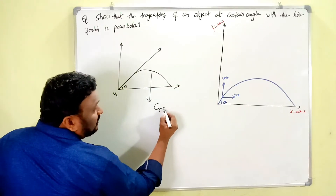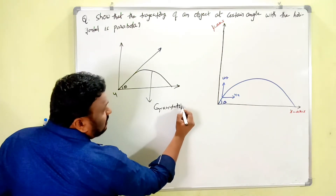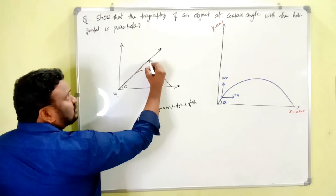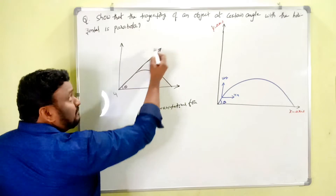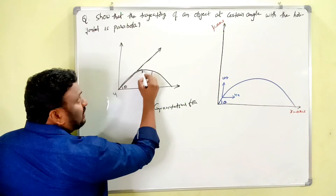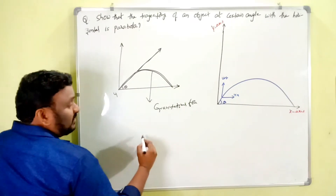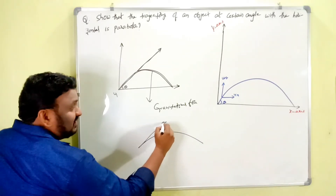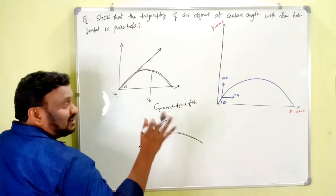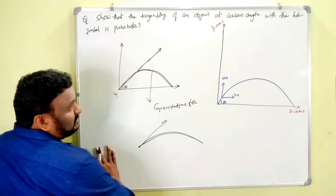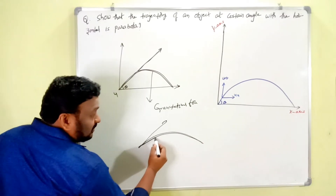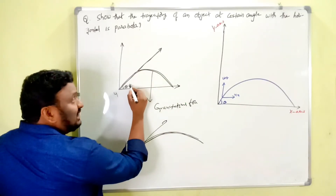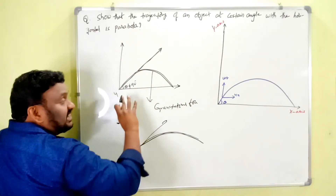Under the influence of gravitational force, the body moves in the path of a parabola. This is the parabolic path due to gravitational force. The body moves in a parabolic path when projected into the air at some angle other than 90 degrees.